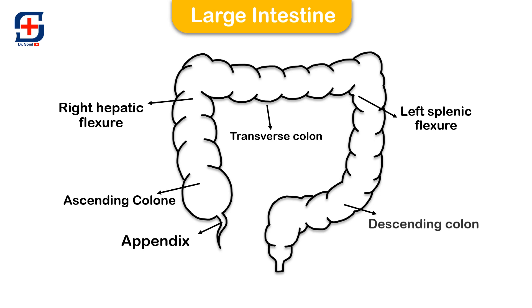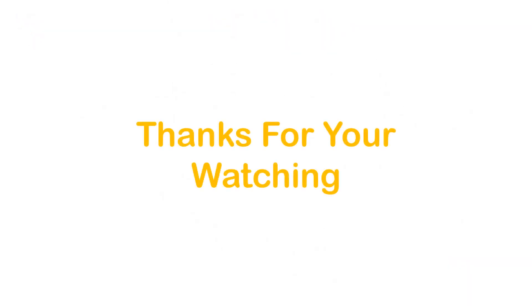The sigmoid colon, or pelvic colon, is the part of the large intestine that is closest to the rectum. The rectum is the final straight portion of the large intestine in humans and some other mammals.